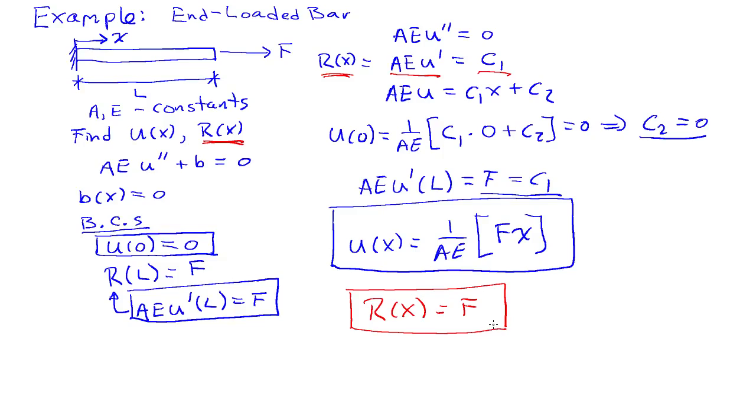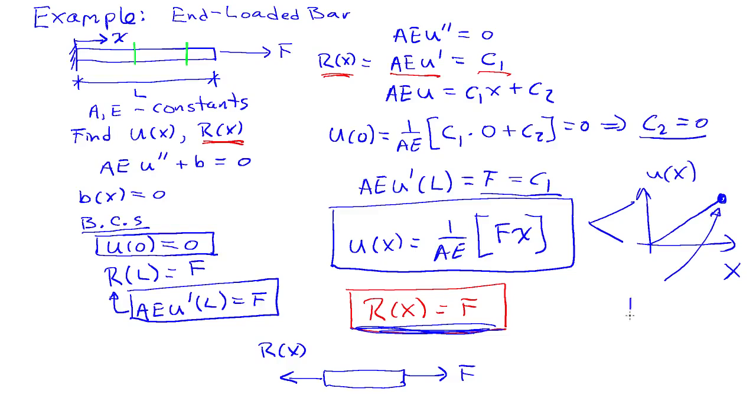And if we think about that, that makes complete sense. If I make a section cut in the bar anywhere, I'll always be looking at a picture that looks as follows. So that picture immediately tells me that R of x is equal to F. So that matches this relationship that I have here. And this relationship here tells me that if I make a plot u of x versus x, then I have a linear distribution. And then the terminal value here for the displacement is FL over AE, which is the typical standard solution that you find in most textbooks for this problem.